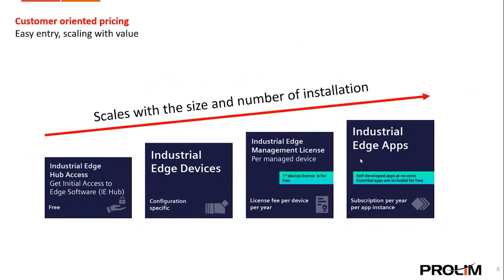This slide illustrates Siemens' customer-centric pricing approach. Key user benefits include: Industrial Edge Hub access at no initial cost; Industrial Edge devices tailored to user needs with customization across different device variants; Industrial Edge Management licenses per managed device, with the first license free and subsequent licenses billed annually per device; and Industrial Edge apps with no charge for self-developed apps. Some essential apps like connectors for crucial databases are provided for free, while marketplace apps encourage yearly subscriptions. Self-developed apps can also be posted on the marketplace for other users.